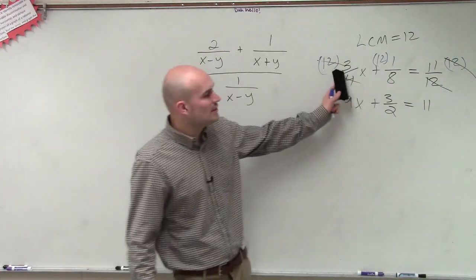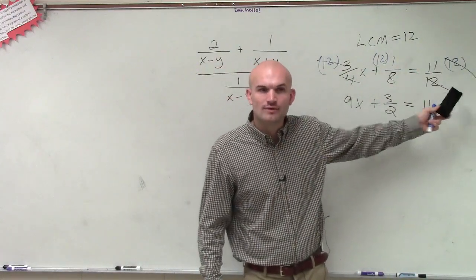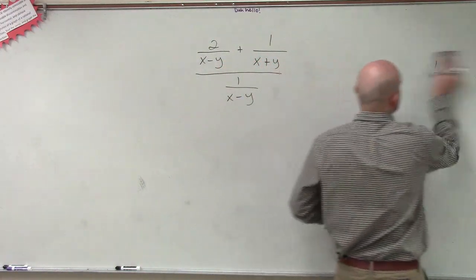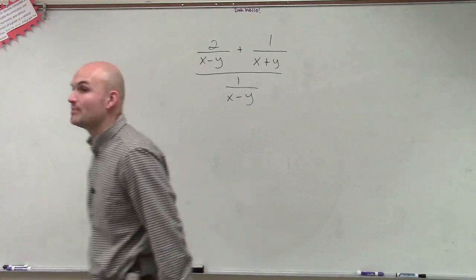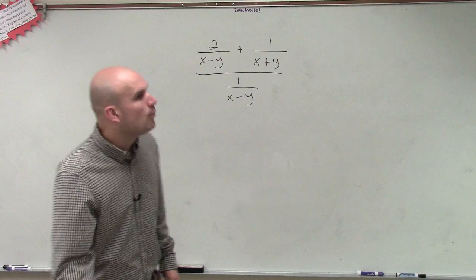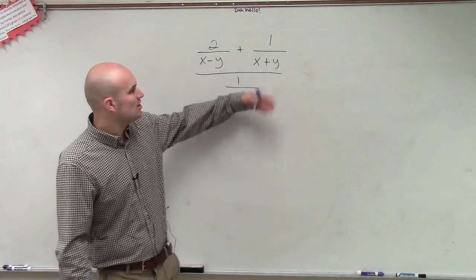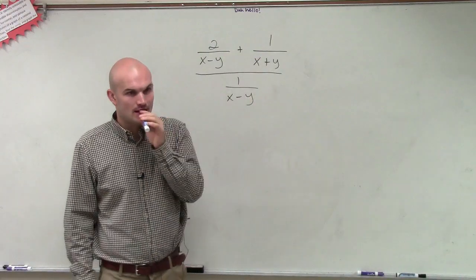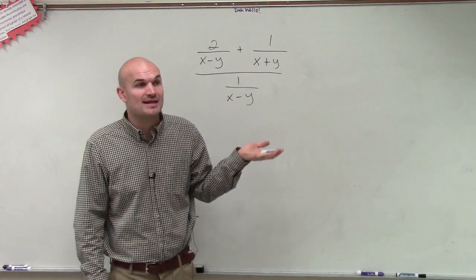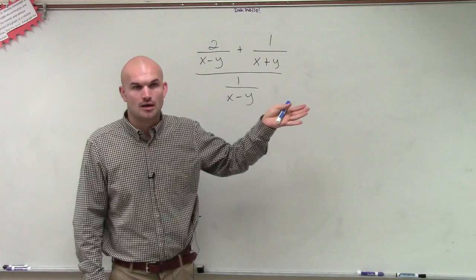So that's the exact same thing. Notice, though, guys, as long as we do it to everything, we keep the equation equal. Well, that can be the same thing when you have a rational expression. As long as you multiply your numerator and your denominator by the same number, you keep what we call equivalent fractions. So what would be my number, or what would be my value that I'd want to multiply the numerator and the denominator by? Well, in an equation, when I had fractions, I multiplied by the LCM. So do you think I might want to multiply by the LCM for my fraction?